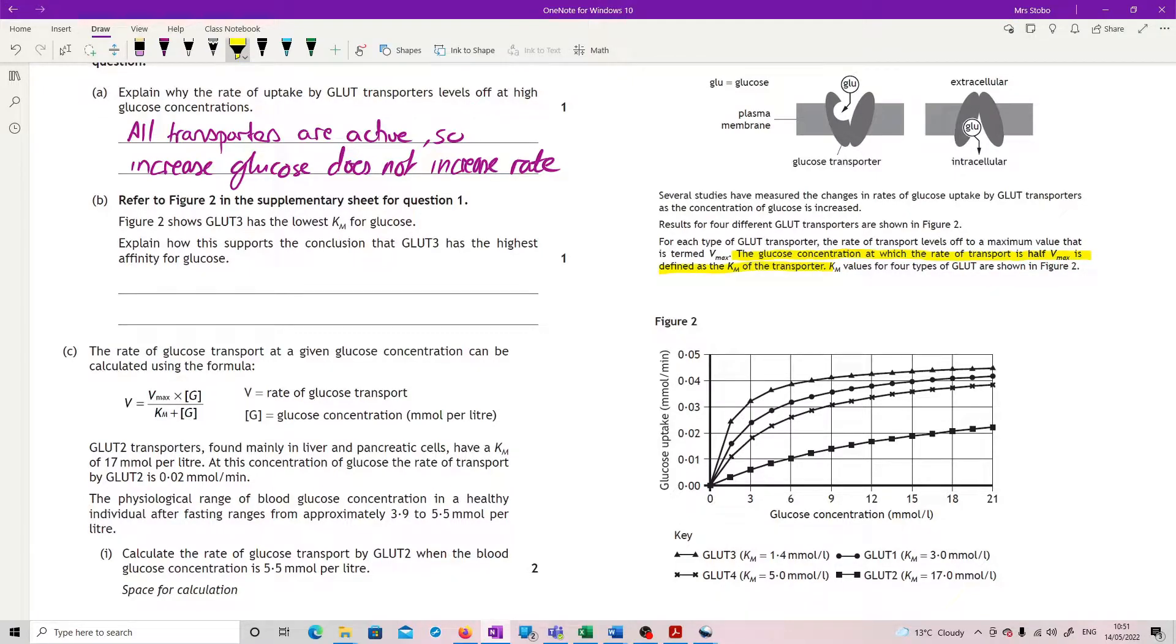If I just bring up our GLUT3, you look at GLUT3 here, it's got the steepest curve. So what's happening is we are very quickly getting to half its maximum, so therefore it is very quickly picking up the glucose. So yeah, that's what we're looking for.